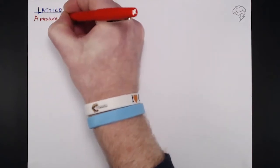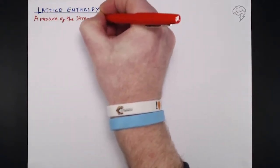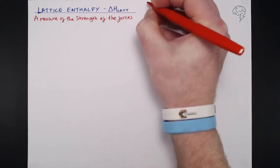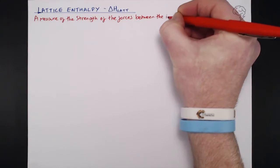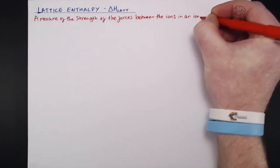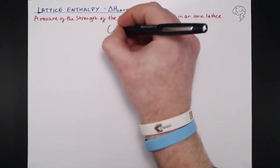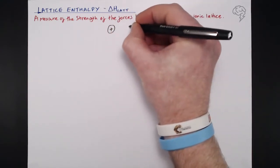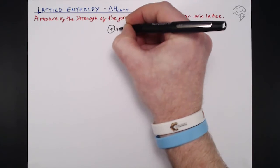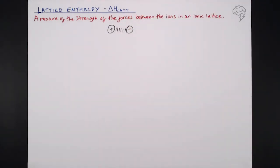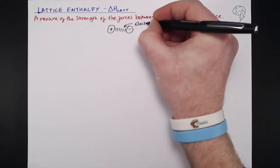Well, it's a measure of the strength of the forces between the ions in an ionic lattice. An ionic lattice is made up of positives and negatives and the electrostatic attractions between them. Delta H Lat is a measure of the strength of those electrostatic attractions.